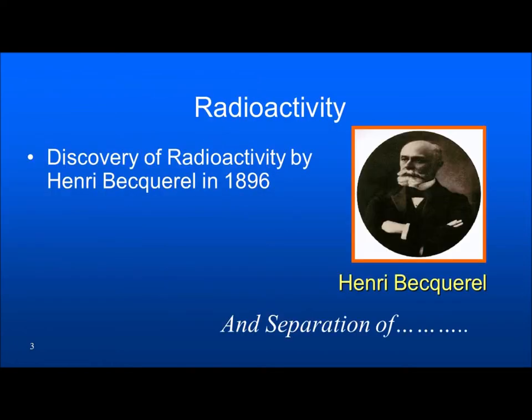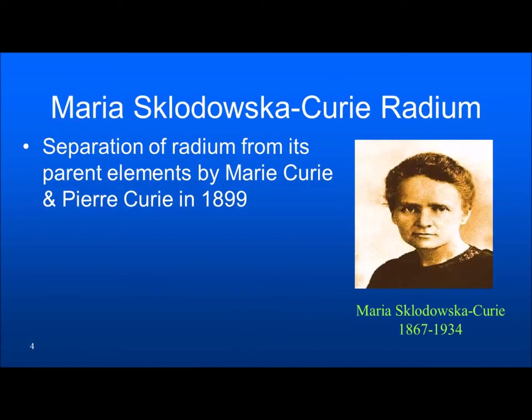The very next year, Henri Becquerel came up with the discovery of radioactivity — the spontaneous emission of radiation from radioactive substances. Subsequently, in the year 1899, Marie Curie and Pierre Curie came up with the separation of radium from its parent elements. This resulted in the use of radium and radioisotopes in medicine. Radium was one of the first radioisotopes to be used in medicine for treatment of cancer.